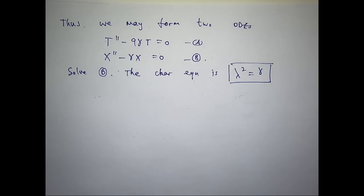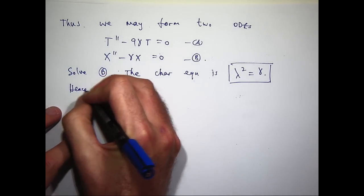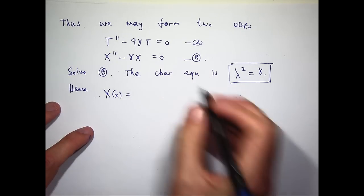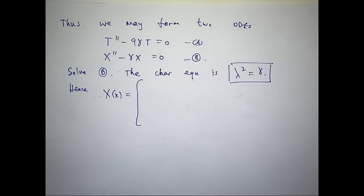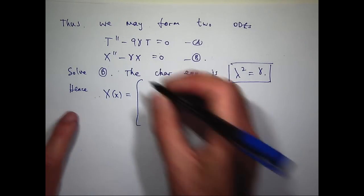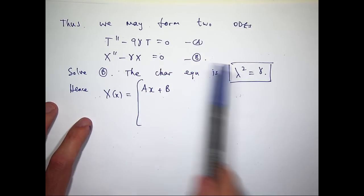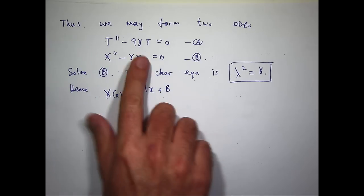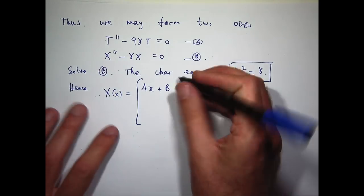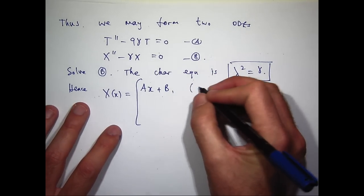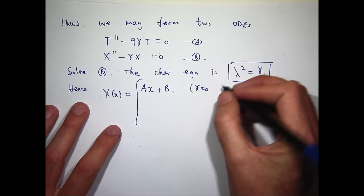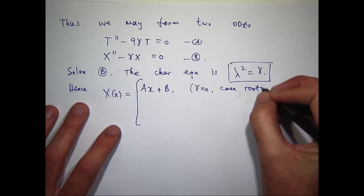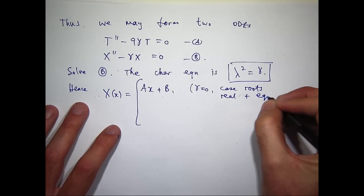Let's consider the simplest case when gamma is zero. The characteristic equation is lambda squared equals zero, so lambda equals zero with repeated roots, and we get a linear solution. Alternatively, replace with zero and solve big X double prime equals zero by integration. Big A and big B are constants.